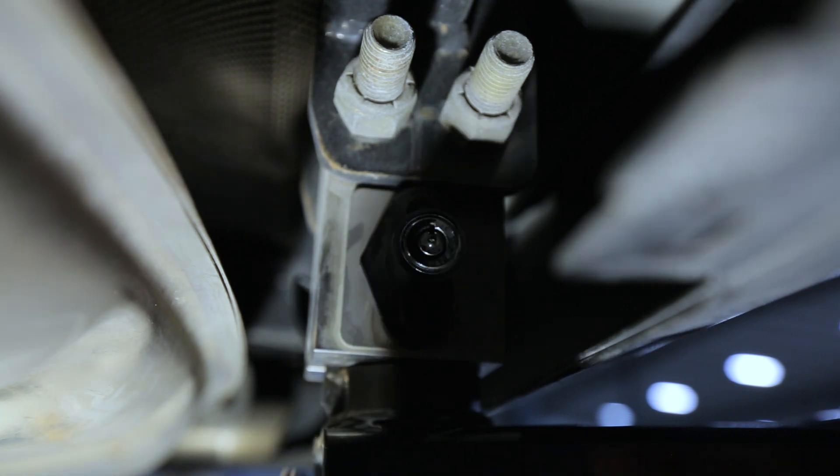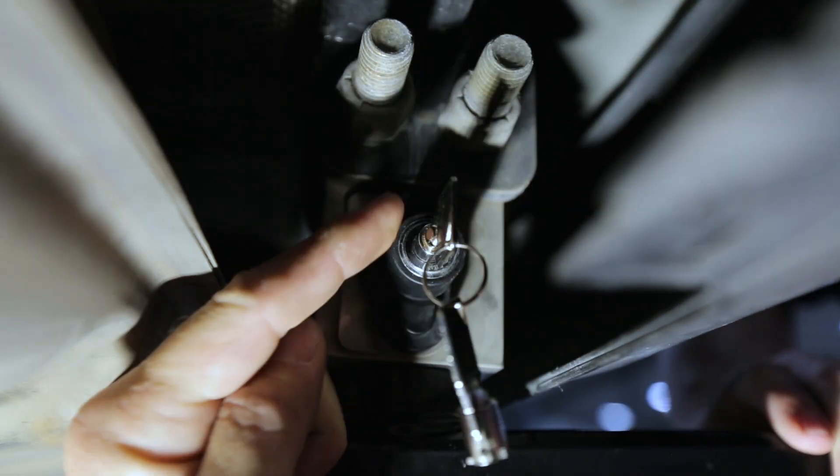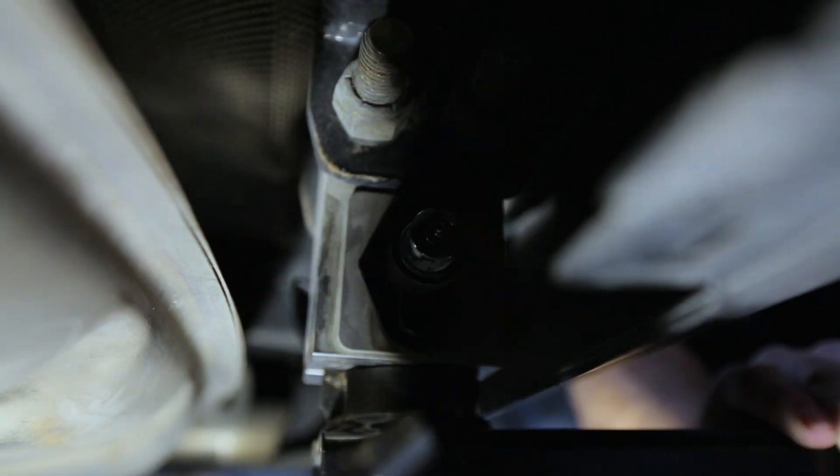Take the key, find the tab, orient that in the 12 o'clock position, insert it into the lock button, press in against the spring and turn the key clockwise. That'll allow the button to pop out.